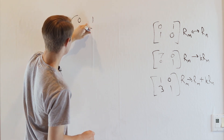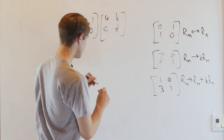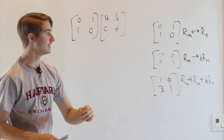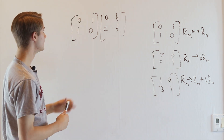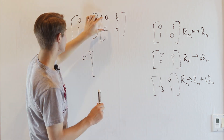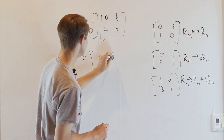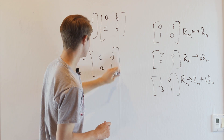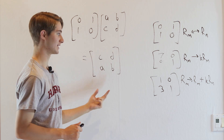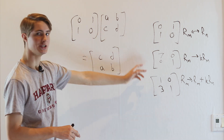We have the elementary matrix [[0, 1], [1, 0]], and we want to multiply it by some matrix [[A, B], [C, D]]. We got [[0, 1], [1, 0]] by taking the identity and swapping the two rows. So if we multiply these matrices together, the answer we should get is the same as swapping the rows of the second matrix — giving us [[C, D], [A, B]]. And in fact, if you do this matrix multiplication, that is exactly what you will get. This works for all elementary matrices, and we're going to look at why for each case.